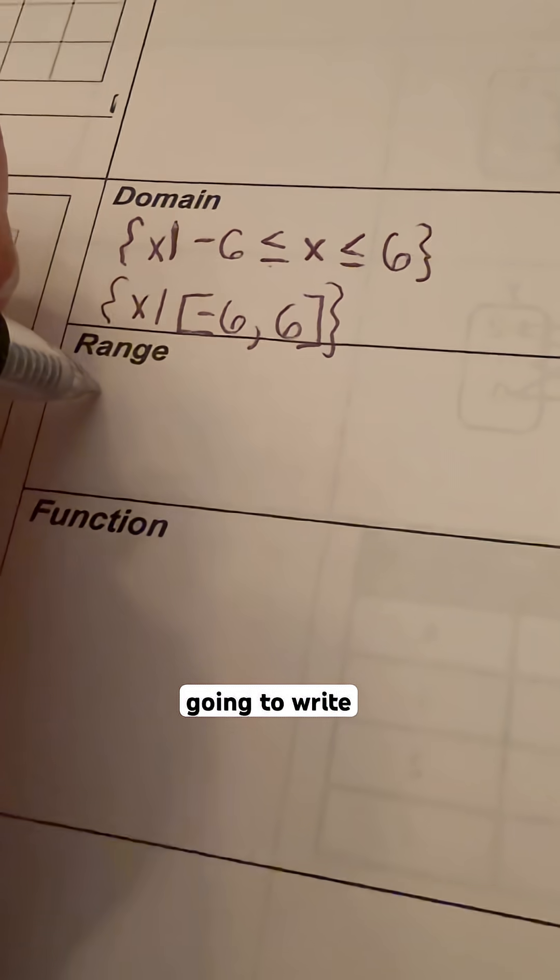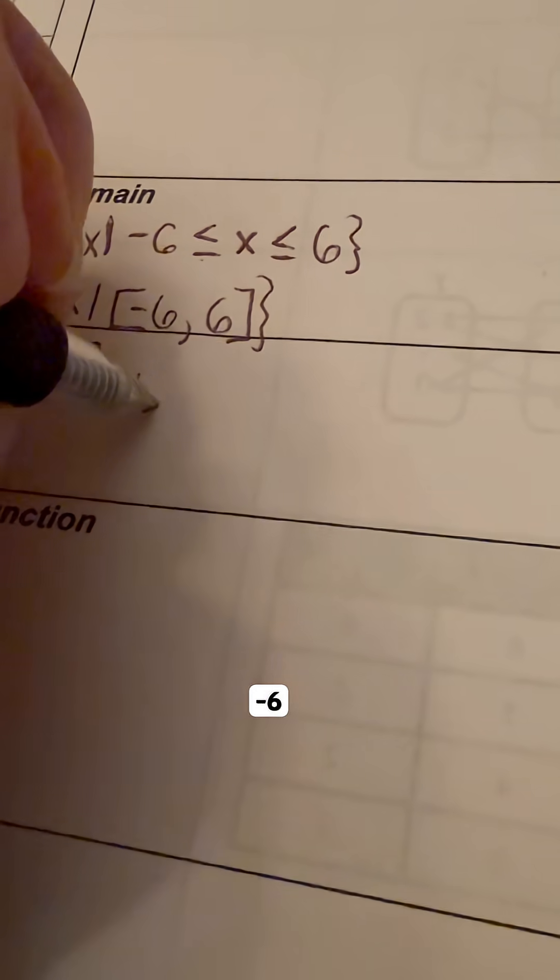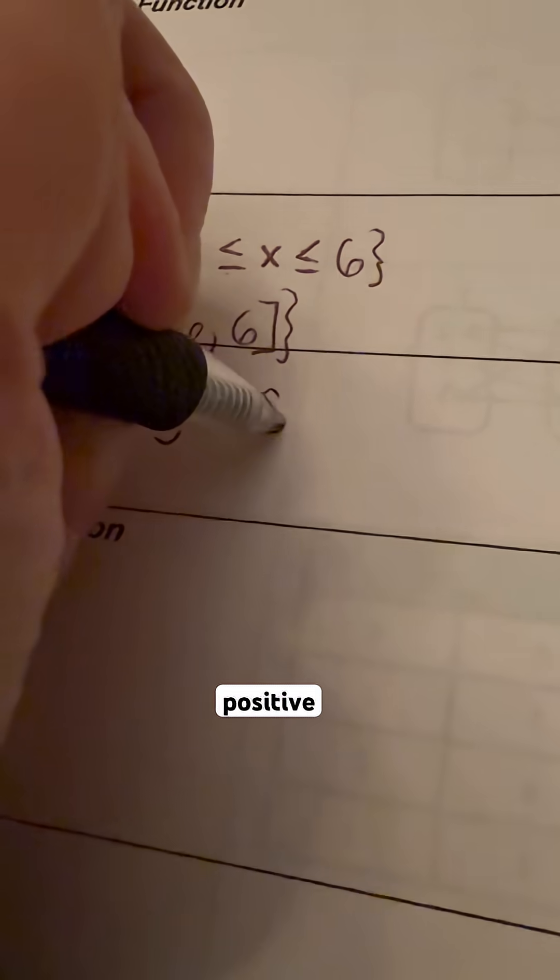So we're going to write negative 6. It does equal, or can equal, negative 6. Because we're talking about range, we're doing y values in the middle. And it goes up to and includes the positive 6 as well.